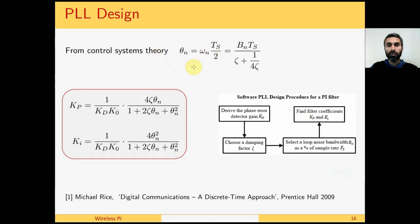So from control system theory, this is something I said before, we are not going to derive these things. Neither are they derived in my book, but they are in Michael Rice's text with the references given here. So if we define theta_N in terms of this loop bandwidth and the sample rate, then we have Kp, the proportional component of the loop filter, and Ki, the integral component of the loop filter, are given by these equations.